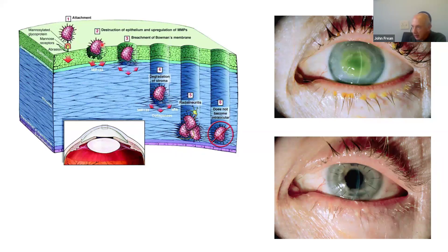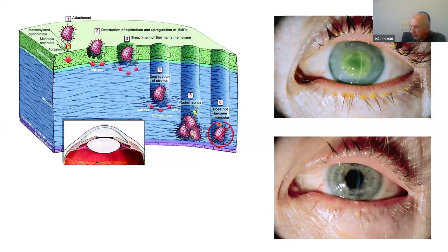The amoeba secretes enzymes and virulence factors which allow it to penetrate through the epithelium, through Bowman's membrane, and into the stroma of the cornea, where it disrupts the architecture. There is perineuronal invasion, which is partly responsible for the severe pain these patients almost invariably have. The infection generally remains confined to the cornea and doesn't penetrate beyond this level of the eye.